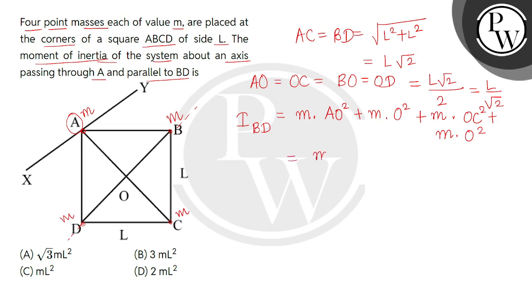Now from this, common will be M, and inside the bracket remains L divided by square root 2 square plus L divided by square root 2 square in brackets. So the moment of inertia about the axis BD or the diagonal BD equals M L square. This is equation number 1.